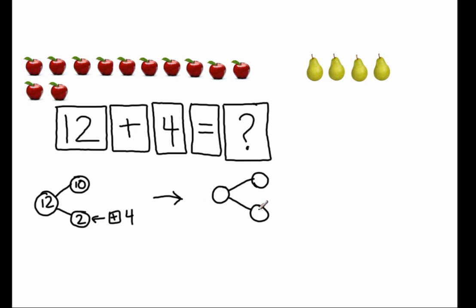So this part became six and I didn't touch this part of the number bond. So that's now 10. Now 10 and six make what? 10 and six make 16.